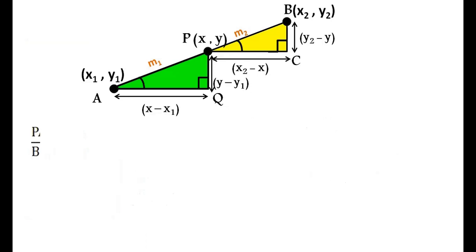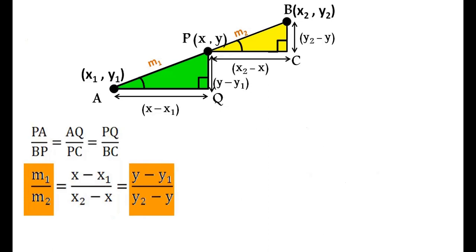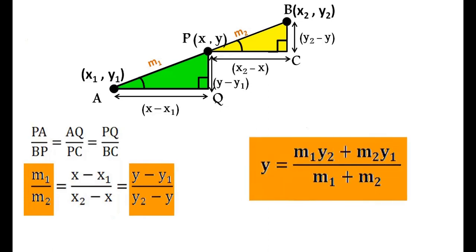Similarly, if we take the first and third ratios, we get y = (M₁y₂ + M₂y₁)/(M₁ + M₂).